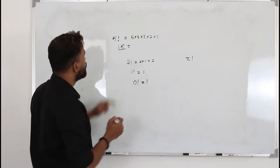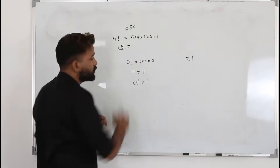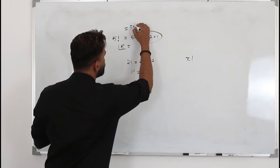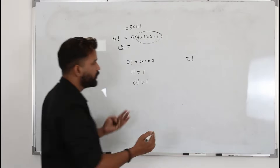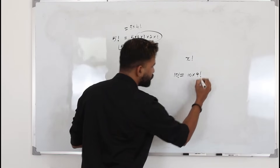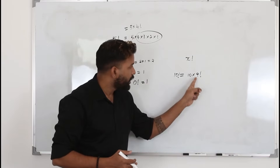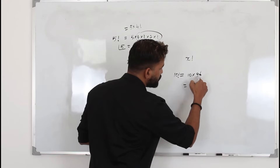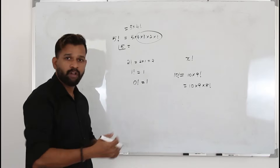There is one more thing to learn: 5 factorial can be written as 5 times 4 factorial, because 4 factorial consists of all numbers 4 and below. So you can write any factorial as n times (n−1)!. For example, 10 factorial is 10 times 9 factorial. You can even write it as 10 times 9 times 8 factorial — it's the same thing. You need to know all these equivalent forms.